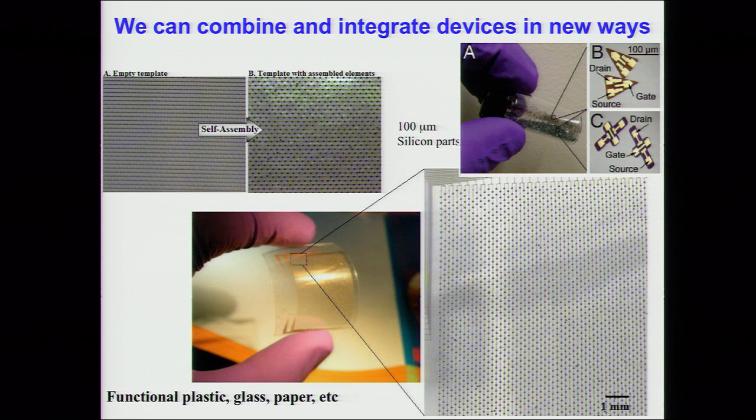The third relevant piece of technology is integration technology. We've developed a series of techniques to put these grains of sand — essentially tiny devices — into new materials. They could go on plastic, on paper; we've done things on glass, bringing function to places that normally didn't have it. We don't traditionally have functional paper or functional windows, but particularly we use this to make functional plastic systems in the form of contact lenses. We have technologies that allow us to miniaturize and integrate devices into flexible and unusual substrates.